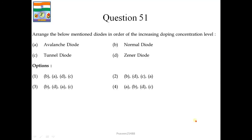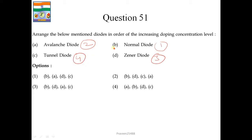Question number 51. Arrange the below mentioned diodes in order of their increasing doping concentration level. There are 4 different diodes given and we have to arrange them from lightly doped to heavily doped. First is normal diode, then avalanche diode, then zener diode, and last is the tunnel diode which is heavily doped. So the correct sequence is D, A, D, C — first option is the correct answer.